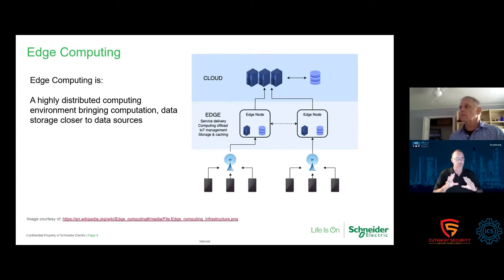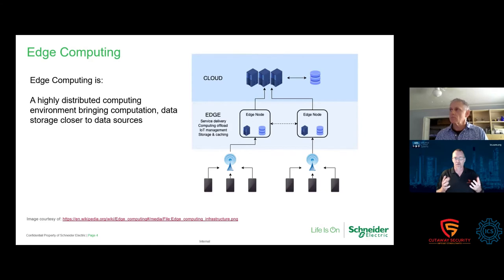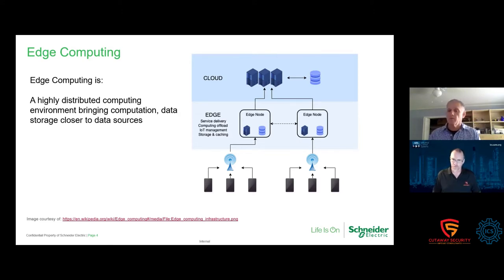For clarification on the diagram: everything on the bottom would be your endpoint devices at levels zero and one. The block labeled 'edge' with the edge node would be servers within your level three environment — your management servers. Those management servers are communicating with the cloud, and some computation is being done in the cloud. You can do analysis up in the cloud — that's a good point.